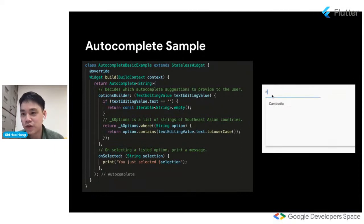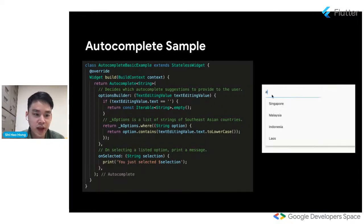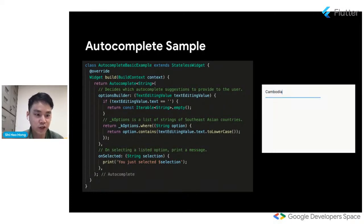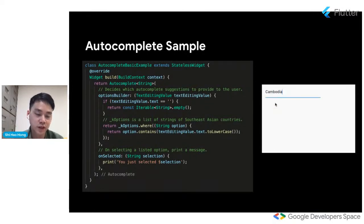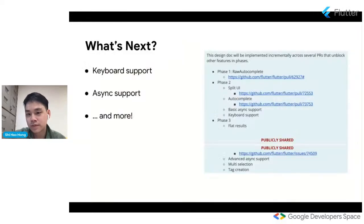Here's a quick sample of how to use the autocomplete widget. In the simplest form, you only need two parameters. The first is options builder, which decides what suggestions to provide based on what's in the text field — in this case a list of Southeast Asian country names filtered by substring match. The second is onSelected, a callback called whenever a listed option is selected.